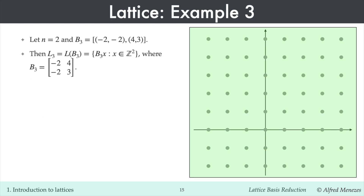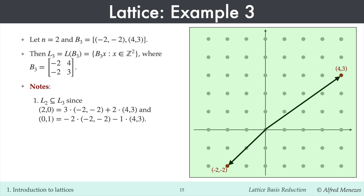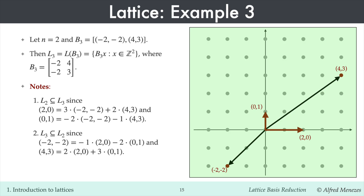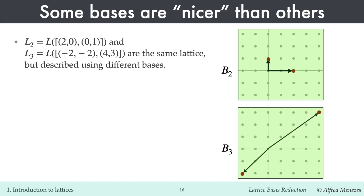Here is a third example of a two-dimensional lattice L3 with its basis vectors. It turns out that L2 is a sub-lattice of L3. This can be verified by expressing each vector in basis B2 for L2 as an integer linear combination of the basis vectors in B3. Conversely, L3 is a sub-lattice of L2, since each vector in basis B3 for L3 can be expressed as an integer linear combination of the basis vectors in B2. Because each lattice is contained in the other, we conclude that L2 and L3 are equal. Thus, B2 and B3 are different bases for the same lattice.